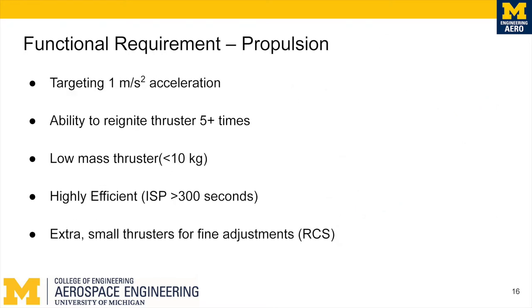The next functional requirement is propulsion. We are targeting one meter per second squared of acceleration with a fully fueled ASAT. It should be able to reignite the thruster five times: two for the initial acceleration and deceleration of interception, two more for a possible second interception, and one more for deorbit or pushing the ASAT into the satellite graveyard zone. The thruster should be low mass and highly efficient to keep the fuel down and cost to orbit down. We will also have extra small reaction control system thrusters for fine adjustments when tracking enemy satellites.